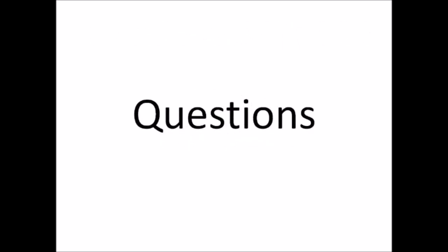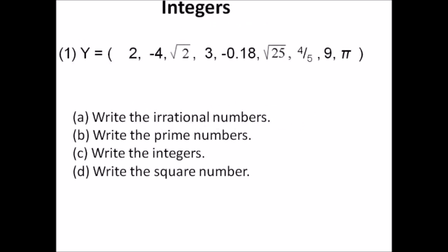Except for constructions and graphs. Number one: integers. The set Y shows some numbers. You have to write the irrational numbers, write the prime numbers, write the integers, and write the square numbers. There will be two irrational numbers, three prime numbers, five integers, and only one square number. See if you can get all four marks for number one.